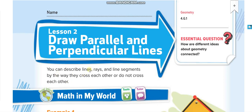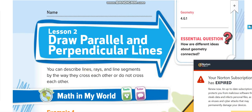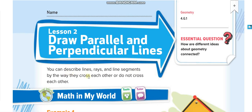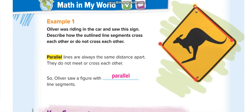In the last lesson you took lines, rays, and line segments. You can describe lines, rays, and line segments by the way they cross each other or don't cross each other. Here these two are line segments — no arrows — and they are not crossing each other; they keep the same distance between them. When two lines, rays, or line segments don't cross each other, they are known as parallel.